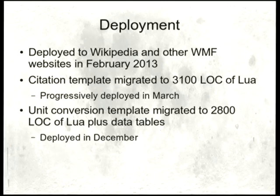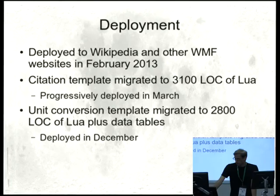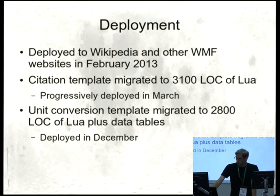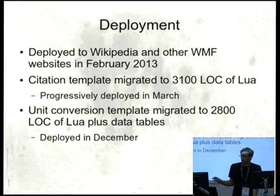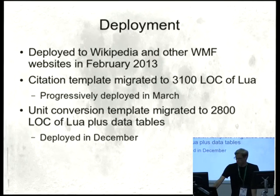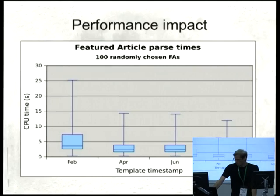We deployed this system to Wikipedia and other WMF websites almost a year ago in February 2013. The citation template, which I showed earlier, was migrated to 3,000 lines of Lua code — done by a volunteer on the wiki — and was progressively deployed in March. Unit conversion was eventually migrated to 2,800 lines of Lua, deployed in December. I'm writing these line counts to show that this is really a complicated problem that people were solving in templates, and now they're solving it in Lua in well-commented, well-structured code.